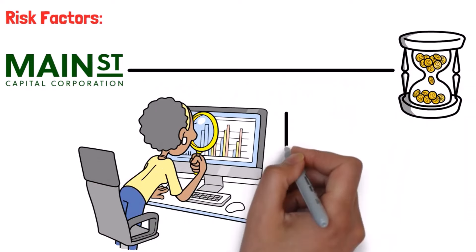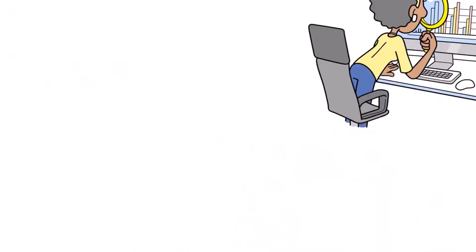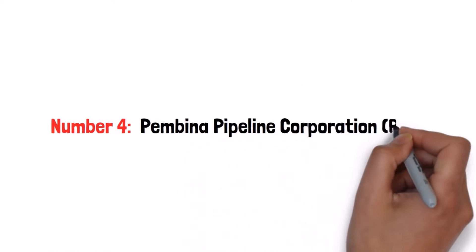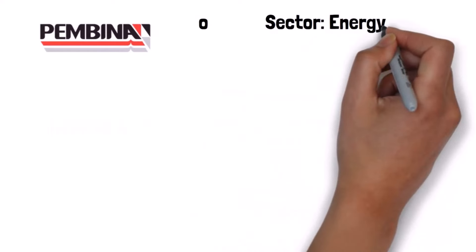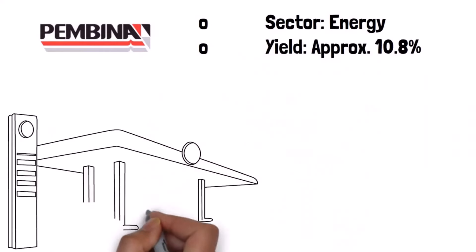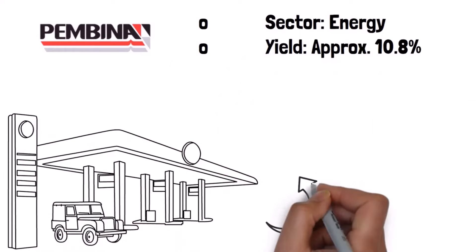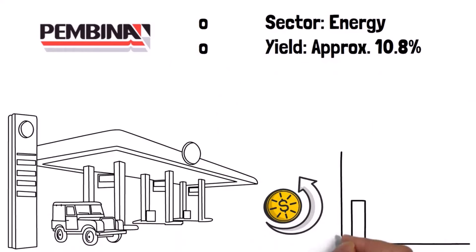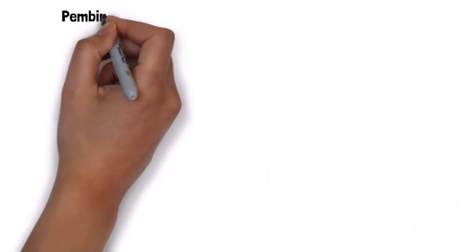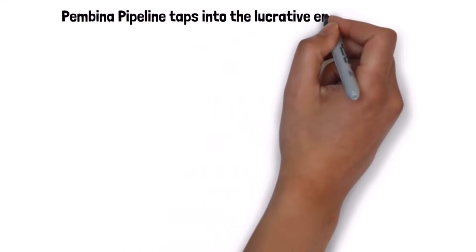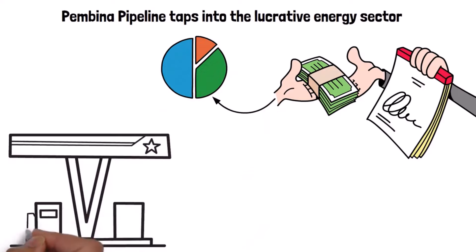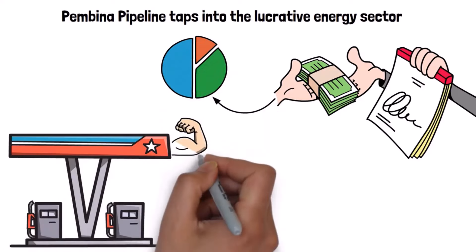And the last one we have: Pembina Pipeline Corporation (PBA). Sector: Energy. Yield: approximately 10.8%. PBA transports and processes energy commodities in North America. Its stable cash flow supports consistent dividends. Payment date: 25th of each month. Pembina Pipeline taps into the lucrative energy sector, ensuring steady cash flows that translate into reliable dividend payments. As energy demands remain strong, PBA is positioned to continue delivering value.